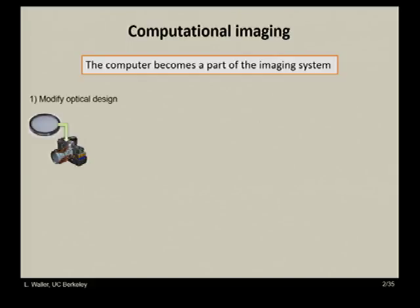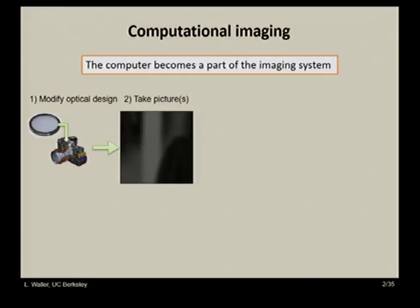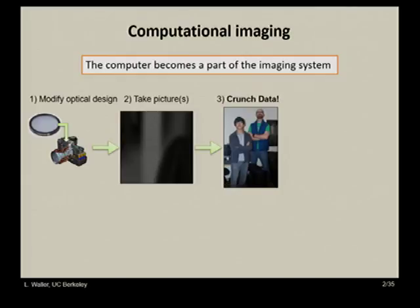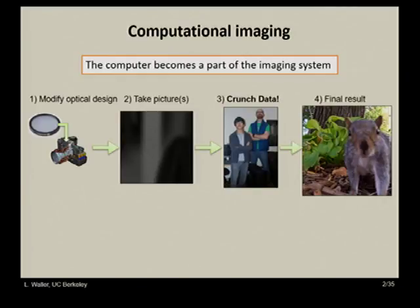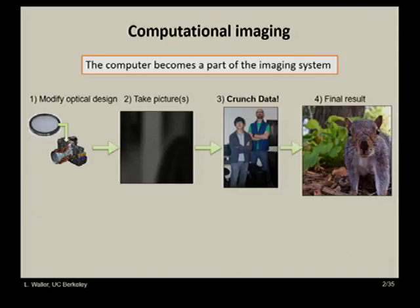Here's a toy example: you take your camera and change its optical design. This is the light field camera — a lenslet array shoved into the camera somewhere. You physically change your optical system. You take a picture; it looks like garbage, but it contains different information than a normal image. You send it to some nerds to process it, and they give you back a picture from the light field camera. The result is digitally refocusable — a light field reconstruction that allows you to focus at any depth after the fact. The hardware modification enabled this, but the algorithms allowed you to get at this from the data.